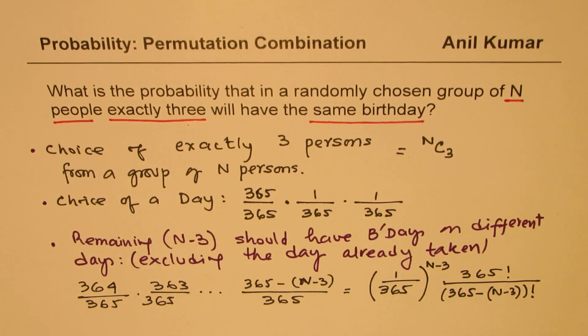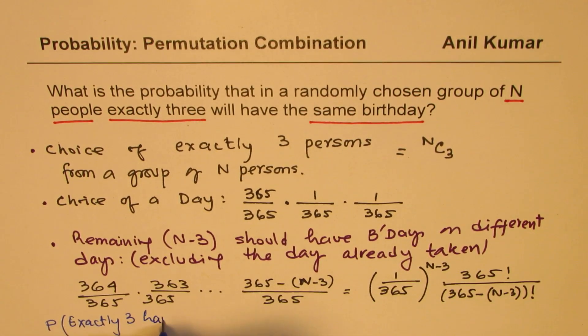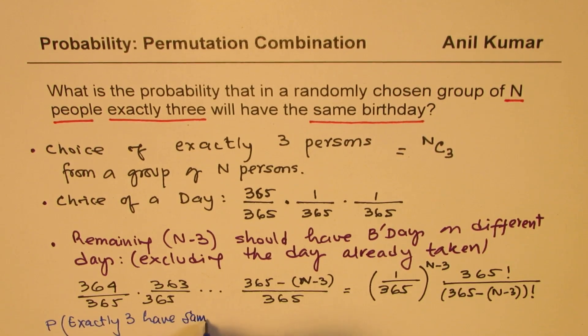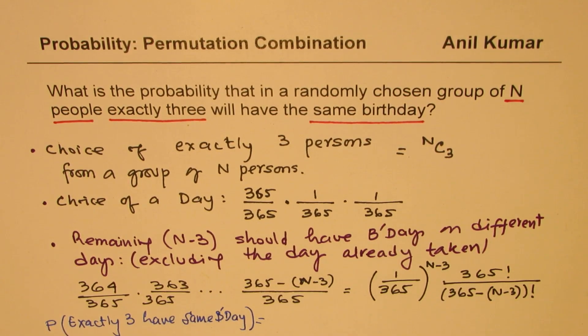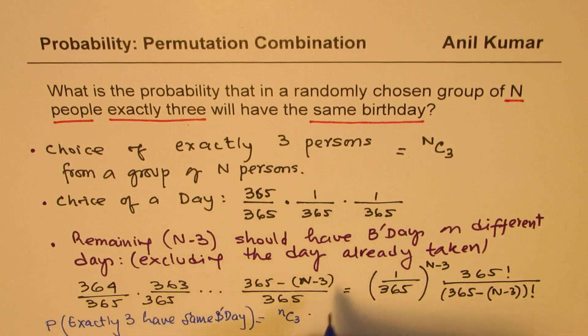And now, we can write down our final answer, which is the probability that exactly 3 have same birthday. So it is the product of all this, that is to say, nC3 times all this, which is 365 times 365 cube times this, which is 1 over 365 to the power of n minus 3.